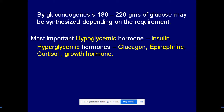Two terms you should remember: hyperglycemia and hypoglycemia. Hyperglycemia means increased blood glucose concentration. Hypoglycemia means decreased blood glucose concentration. Two hormones are responsible for the maintenance of blood glucose in the body: hypoglycemic hormones and hyperglycemic hormones.